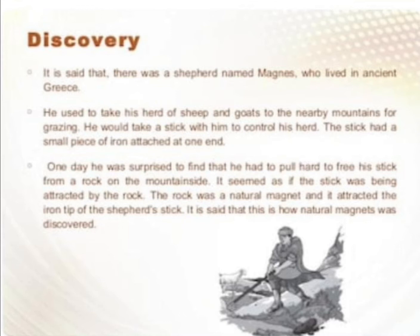One day, he was surprised to find that he had to pull hard to free his stick from a rock on the mountainside. It seemed as if the stick was being attracted by the rock. The rock was a natural magnet and it attracted the iron tip of the shepherd's stick. It is said that this is how natural magnet was discovered.